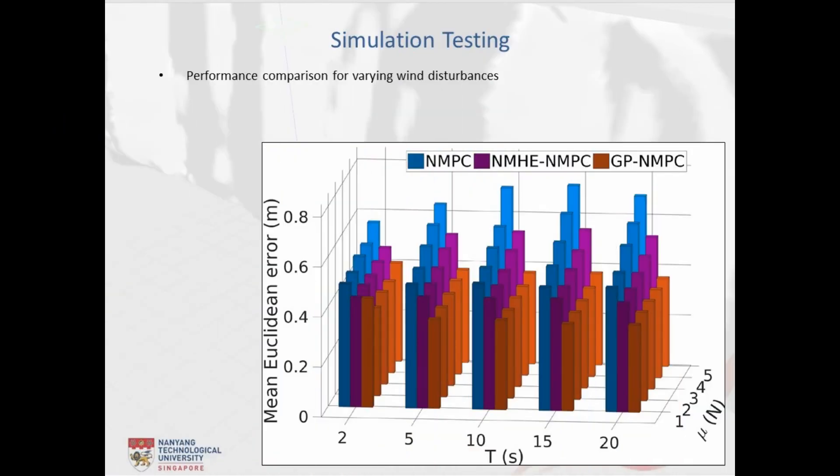To further evaluate the robustness of the GP-NMPC framework to various levels of wind disturbances, we also conducted some statistical analysis. Herein, the mean is varied between 1 to 5 N and the time period is varied between 2 to 20 seconds, whereas the added noise is kept the same. As can be seen, the Euclidean error values increase with the disturbance mean for the conventional NMPC and the NMHE-NMPC framework, whereas in the case of the GP-NMPC framework, the error rise is negligible.